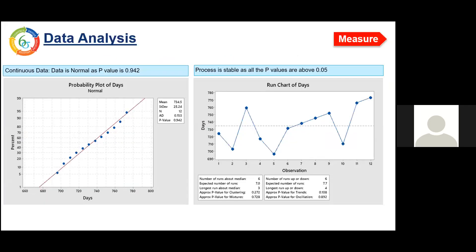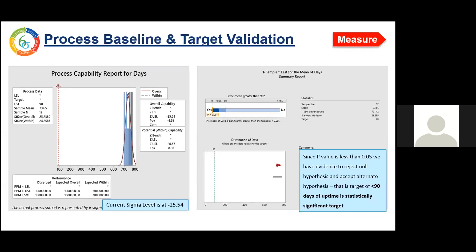Moving to the Measure phase. We collected 12 weeks of data for device uptime, and to check whether the data was normal and stable, we performed a normality test and run chart. We found that the data was normal as well as stable. Through the process capability test, we came to know that the current Sigma level is very low at minus 25.54, through which we can also tell that the target of less than 90 days of device uptime is statistically significant.